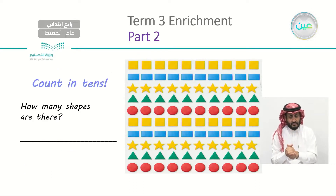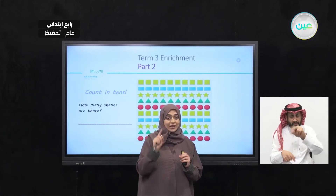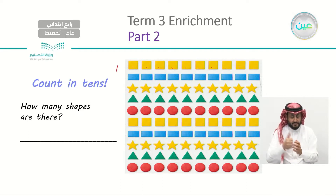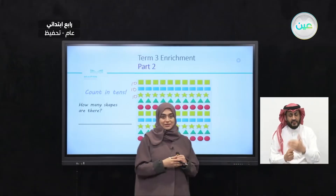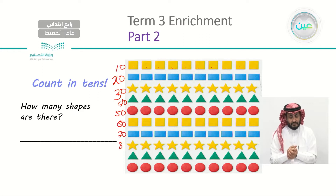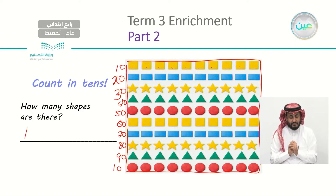Now let's count in tens. Let's count the first row — since all of them are stacked, each row has ten. Here we have one, two, three, four, five, six, seven, eight, nine, ten. Which means we have ten here, ten here, and ten here. Let's count by tens — are you ready? Ten, twenty, thirty, forty, fifty, sixty, seventy, eighty, ninety, one hundred. So we have a total of one hundred shapes.